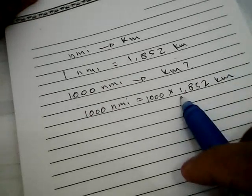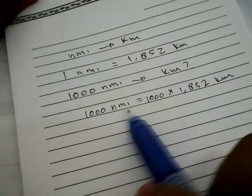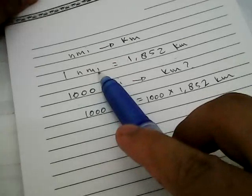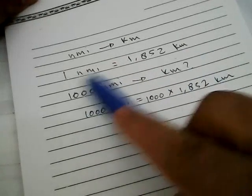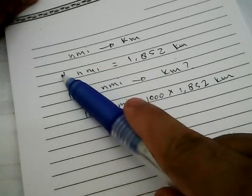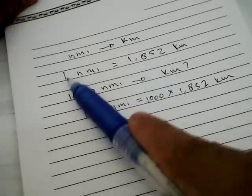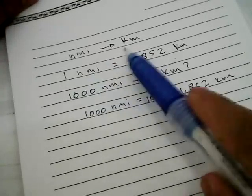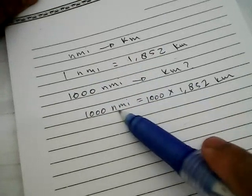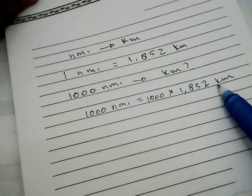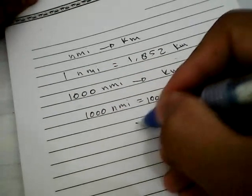Well, why do we multiply this 1,000 with this number? It's because we want to convert nautical miles into kilometers. So anything coming before this nautical mile, for example 1,000, we need to multiply any number with this number. Because 1,000 comes before nautical mile, we need to multiply this number, 1,000.